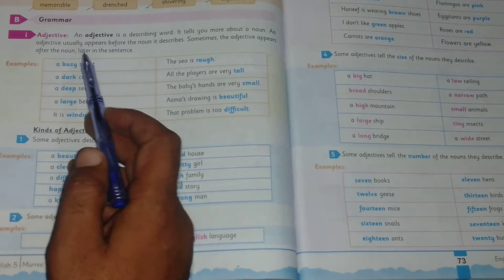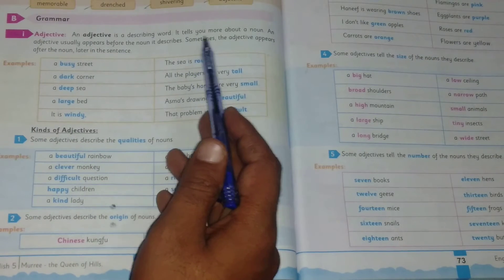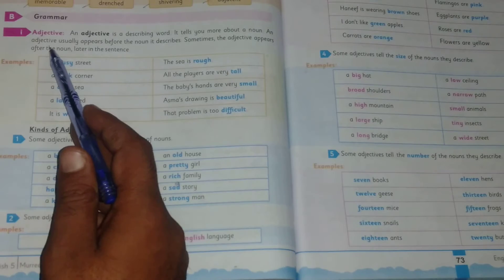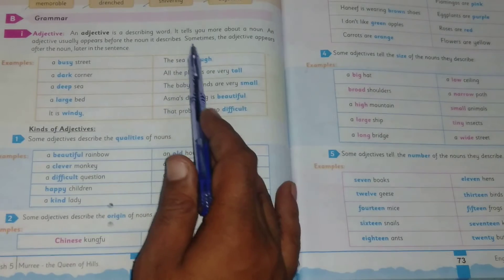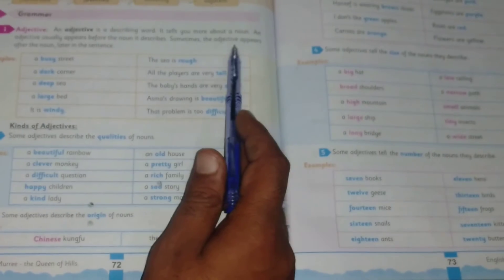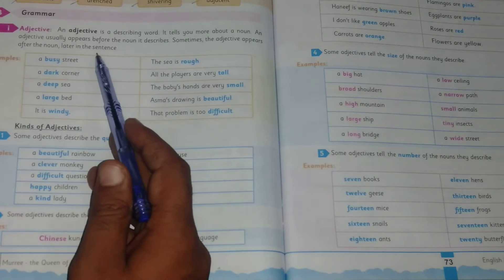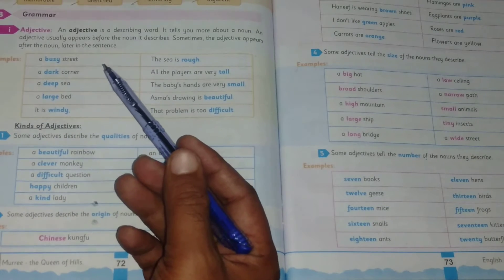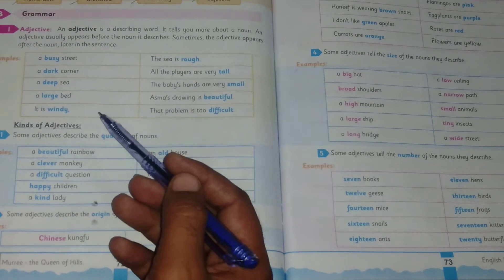Grammar. An adjective is a describing word. It tells you more about a noun. An adjective usually appears before the noun it describes. Sometimes the adjective appears after the noun, later in the sentence.